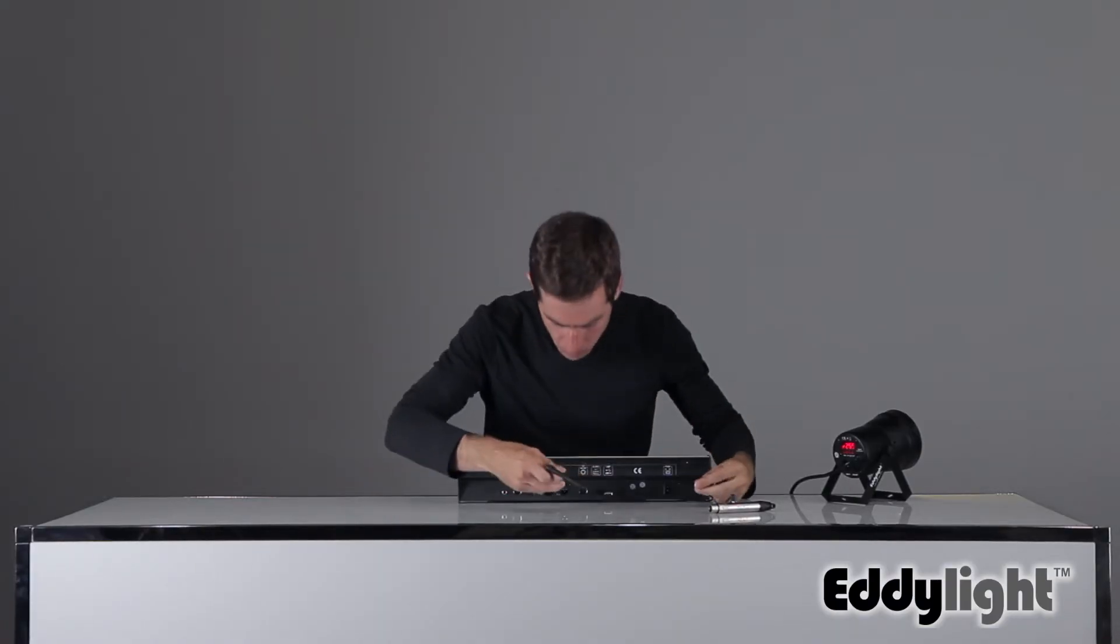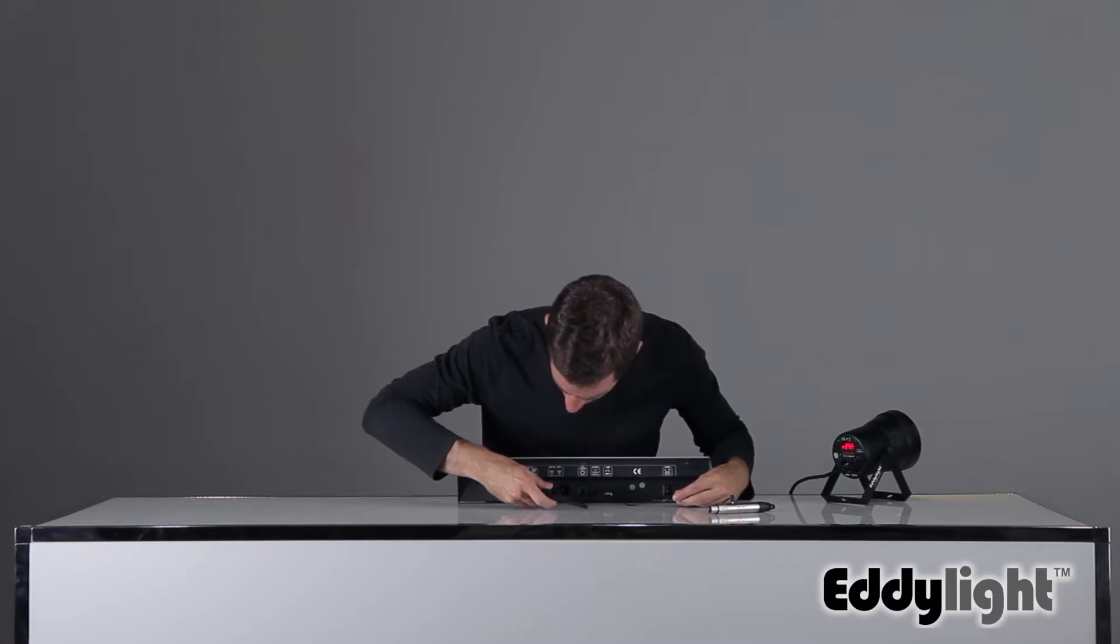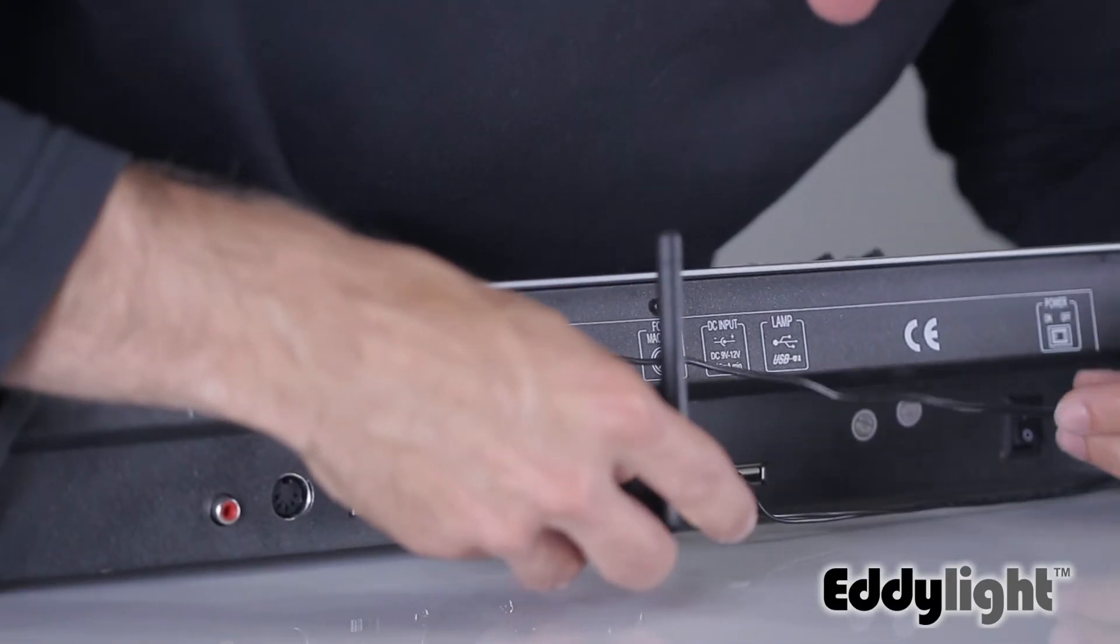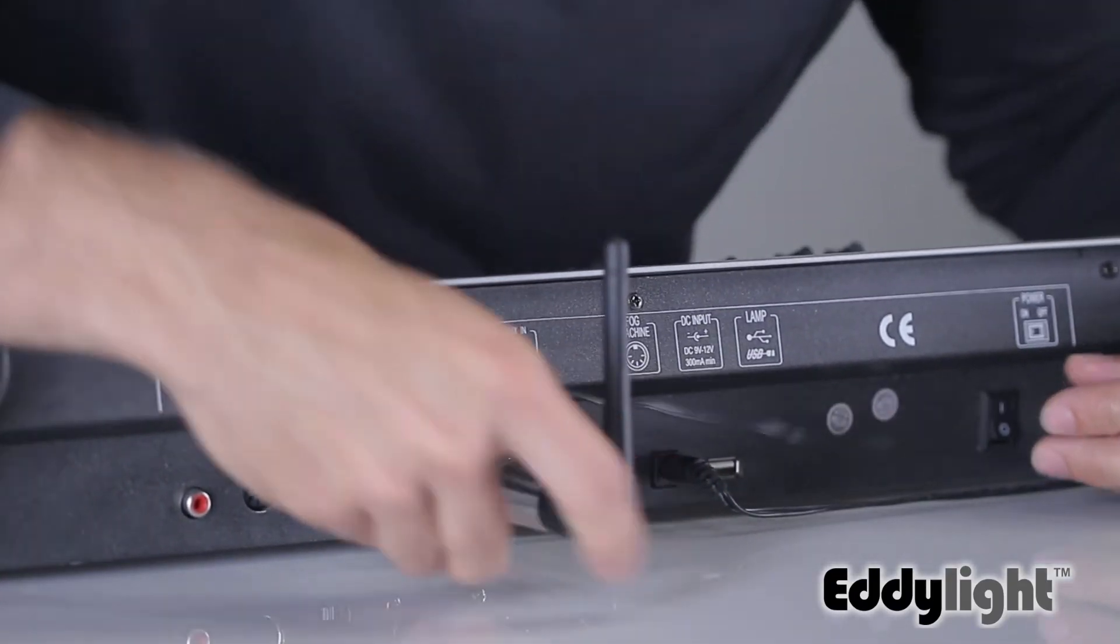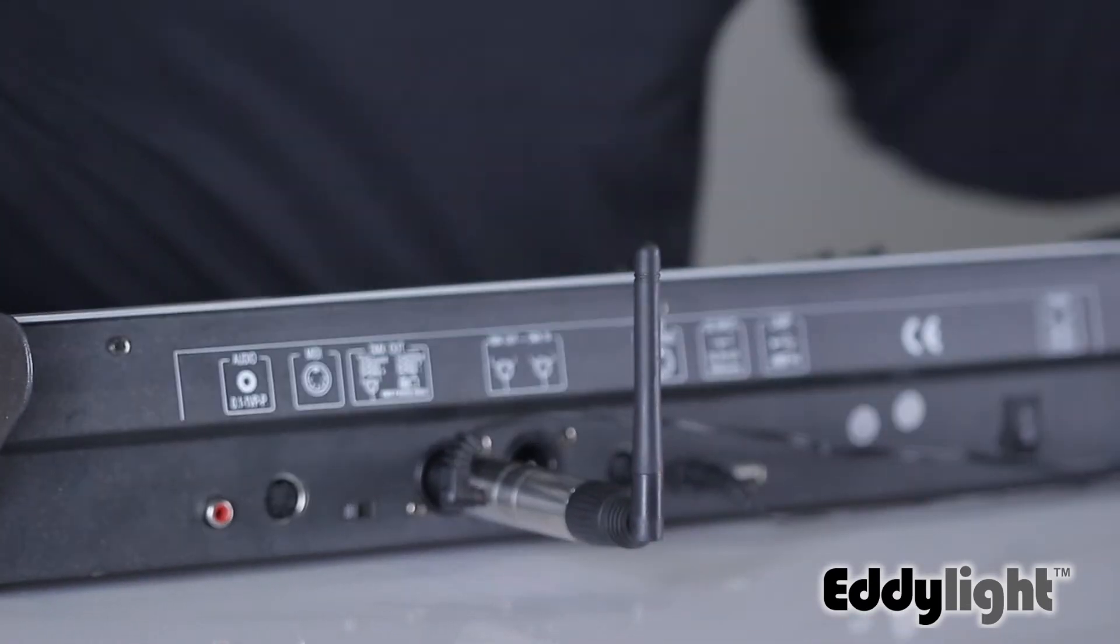You'll only ever need one transmitter which you'll have to plug directly into your DMX board and to DMX out. Once plugged in, the red light will start flashing red, meaning that it's looking for a signal.